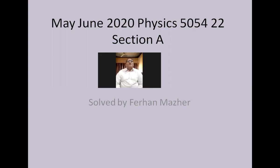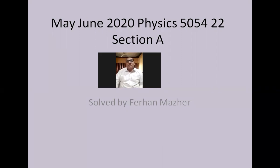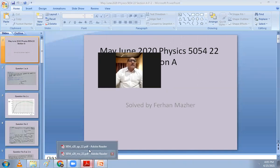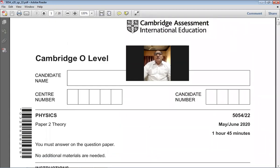Good morning, students. My name is Farhan. Today is the 25th of April 2021, a Sunday. We are studying Physics, O-Level, code 5054. Today we have set out to solve the May/June 2020 Paper 22, a theory paper from Zone 2. In this session we will solve only Section A; Section B will be covered in another video. Let's start without delay.